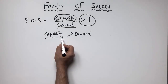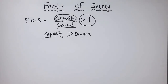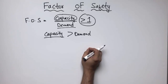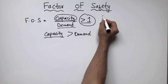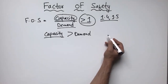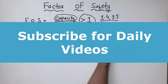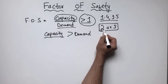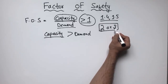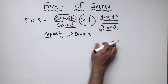We always design structures with more capacity than the demand. The factor of safety depends on the importance of the structure or machine. If it is less important, the factor of safety may be taken in the range of 1.4 to 1.5. But if the structure is more important, you have to take a value of two or three, meaning the capacity is two or three times more than the demand.